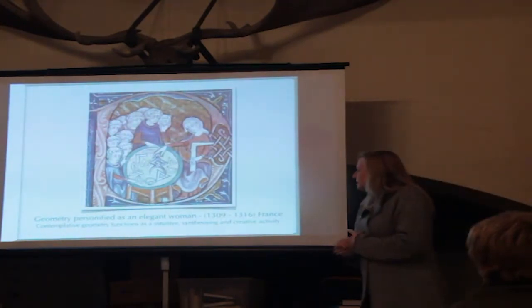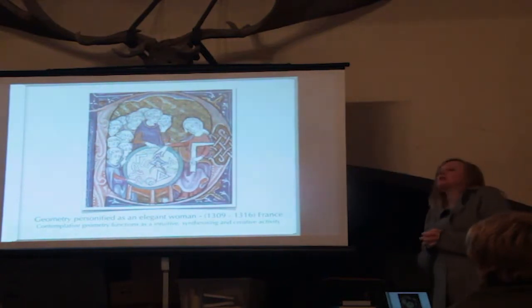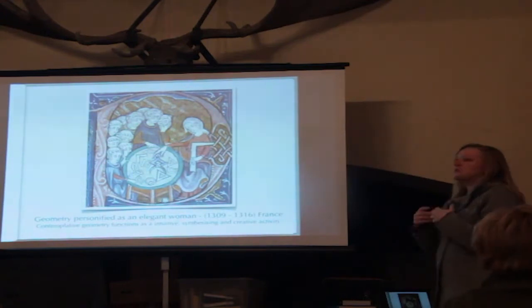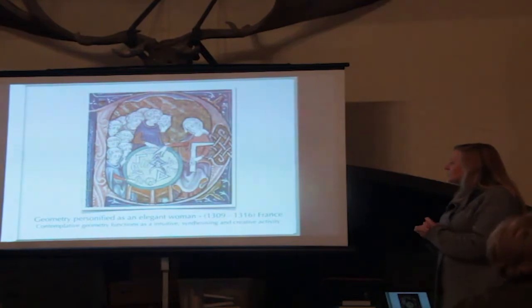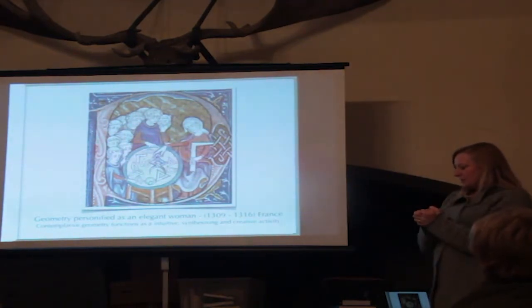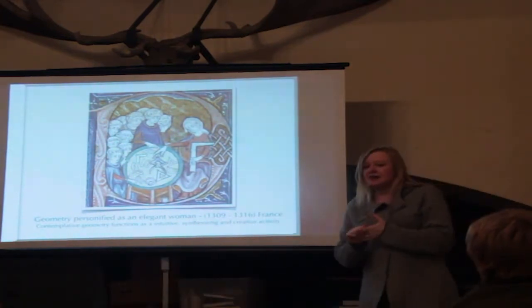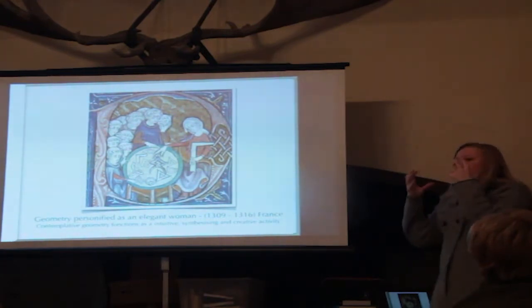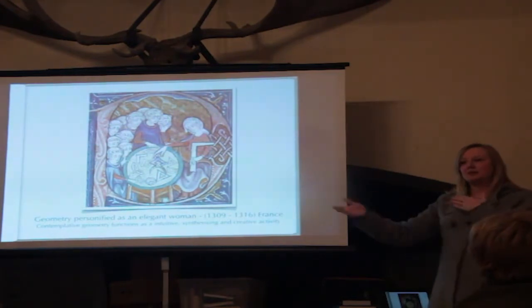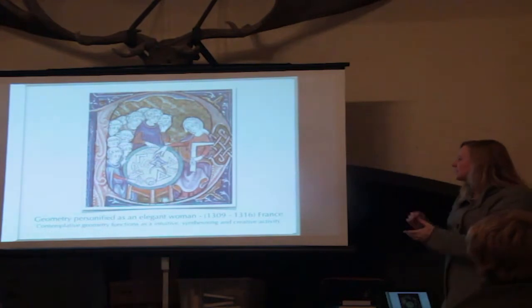Here is geometry personified as an elegant woman. In ancient times, geometers had a kind of muse whose name was Sophia, and Sophia means wisdom. Here she is — Sophia, wisdom, shown as a geometer. In a sense, geometry has different aspects to it. The feminine part of geometry is that intuitive, creative side, and its male component is the physical side of creating and drawing geometry. So there is that masculine and feminine aspect to it.